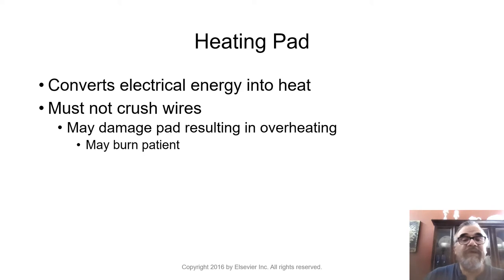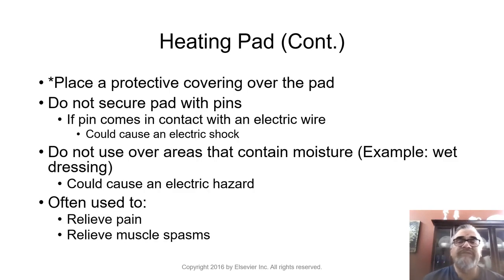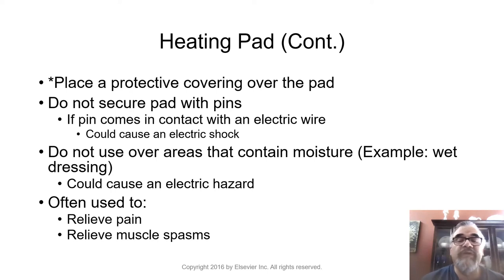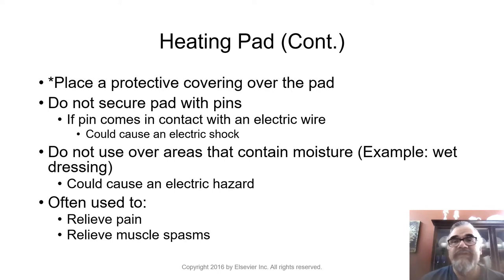One physical agent we use is a heating pad, which converts electrical energy into heat. You must not crush the wires or damage the pad, as it can result in overheating and burning the patient. Always put a towel or pillowcase over the heating pad. Don't secure it with pins, as metal pins could poke through the pad, short a wire, and cause a shock. Don't use heating pads over areas containing moisture — electrical current and moisture is not a good combination. For a heating pad, you want dry heat, not moist heat.